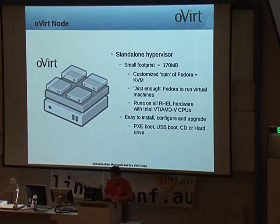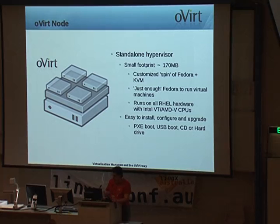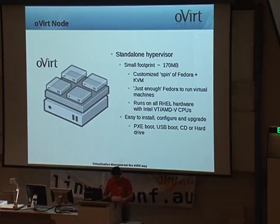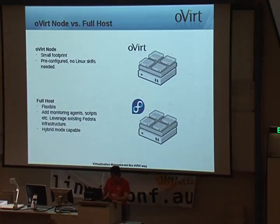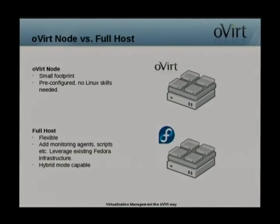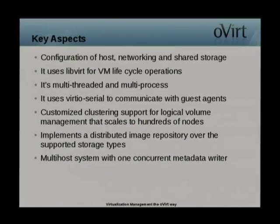oVirt Node is the second component. There are two versions: a standalone hypervisor, which is a very small custom spin of Fedora using just enough Fedora to run on machines, and as an alternative you can use a full host — for example, a Fedora host with VDSM and libvirt installed to act as a hypervisor. Key aspects include configuration of hosts, networking, and shared storage. It uses libvirt for VM lifecycle operations, is multi-threaded and multi-processed, uses virtio-serial to communicate with guest agents, has customized clustering support for LVM, scales to hundreds of nodes, and implements a distributed image repository over the supported storage types, plus a multi-host system with one concurrent metadata writer.